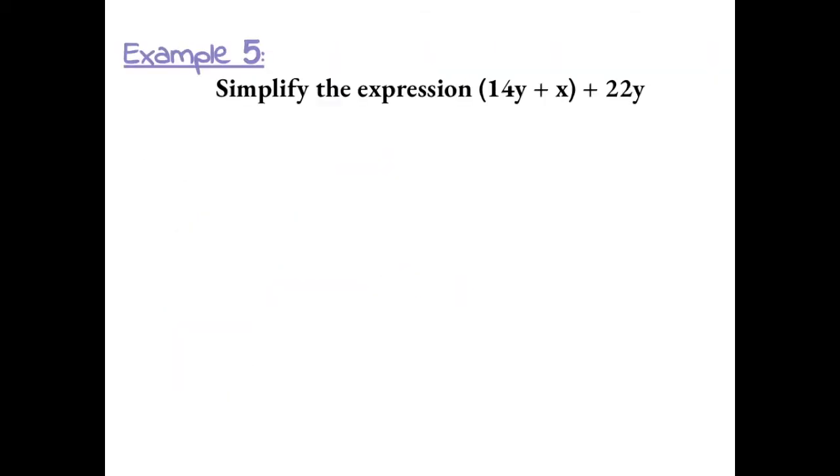Example 5: Simplify the expression (14y plus x) plus 22y. So because we have a set of parentheses, I need to get my like terms together inside the parentheses. Again, like terms are terms that have the same variable. So 14y and 22y are like terms. So the first thing we can do is switch the places of the 14y and the x so that our like terms can be next to each other. We can do this by the commutative property.